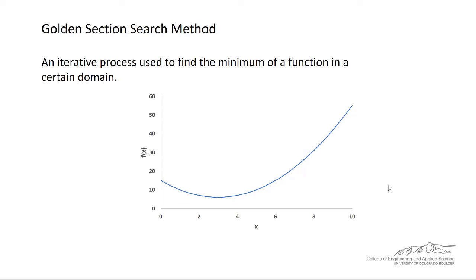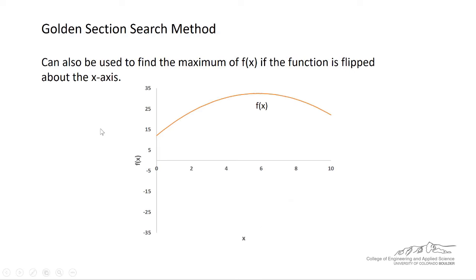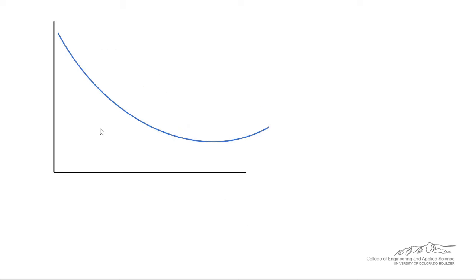You have to have a lower bound and an upper bound, and you have to somehow know your function, and it's used to calculate the minimum. It can also be used to find the maximum of f, but only if the function is first flipped about the x axis, so we could take the minimum of negative f. The process works as follows.